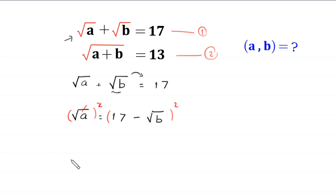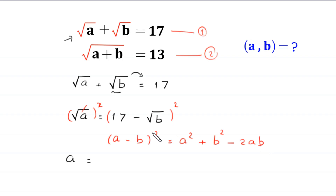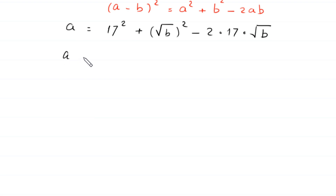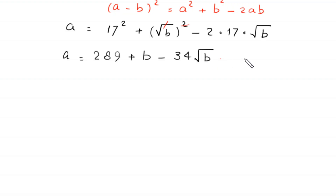The square cancels with the square root, and on the left-hand side we are left with a. Using the algebraic identity (a minus b) squared equals a squared plus b squared minus 2ab, we get: a equals 17 squared plus root b squared minus 2 times 17 times root b. This gives a equals 289 plus b minus 34 times root b. Let's call this equation 3.